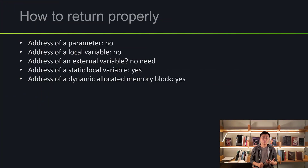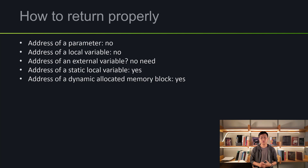Now that you guys are used to dynamically allocated memory, let's do some quick review about returns. On the slide we have five different kinds of returns: returning the address of a parameter, returning the address of a local variable, returning the address of an external variable, returning the address of a static local variable, and the address of a dynamically allocated memory block.